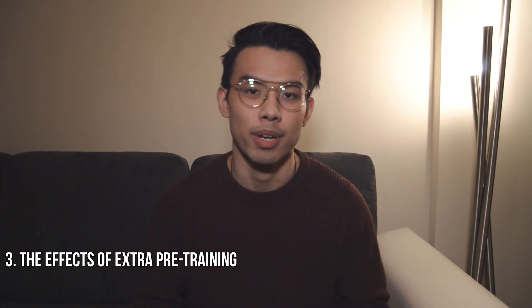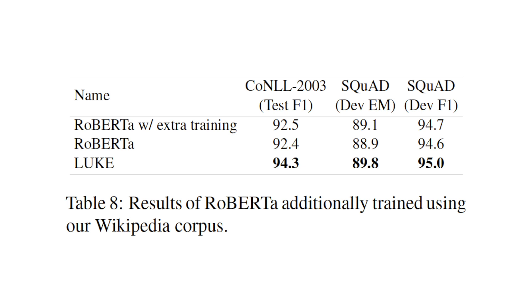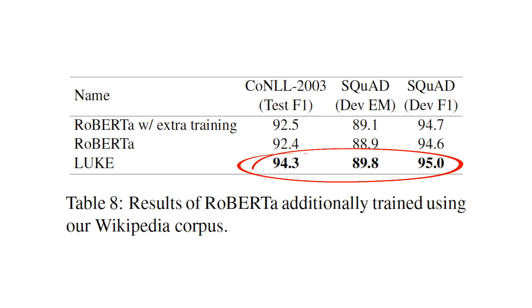Lastly, we look at the effects of extra pre-training steps. LUKE is based on RoBERTa pre-trained on 200,000 steps, and past research has shown that increasing training steps can improve downstream performance. To check whether LUKE's state-of-the-art results are driven by its introduced mechanisms or by longer training, we train another model based on RoBERTa with extra pre-training steps using the masked language model objective, totaling 400,000 steps. The results show that RoBERTa with extra pre-training steps achieved similar performance as RoBERTa at 200,000 steps, while LUKE still has the strongest results — confirming that LUKE's gains are not due to longer pre-training.